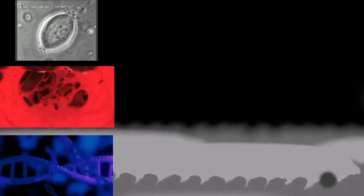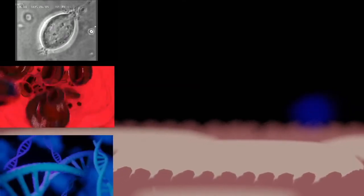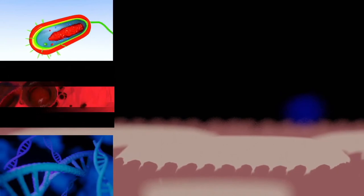Prokaryotic cell structure: flagellum, not always present. Description: long whip-like protrusion that aids cellular locomotion, used by both gram-positive and gram-negative organisms.